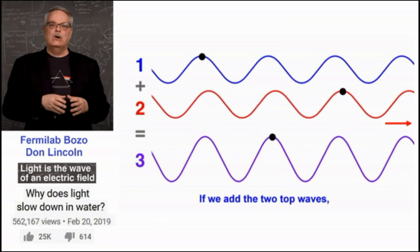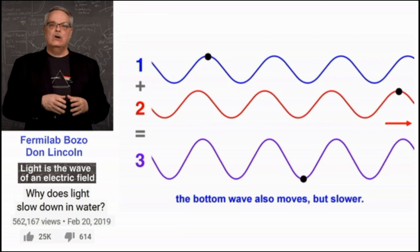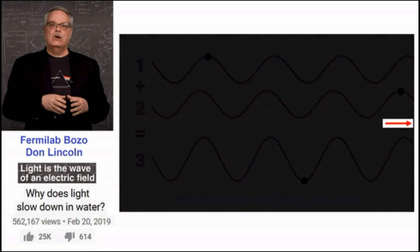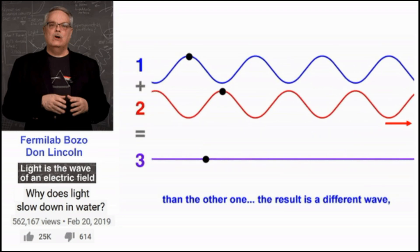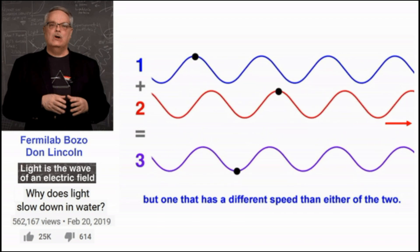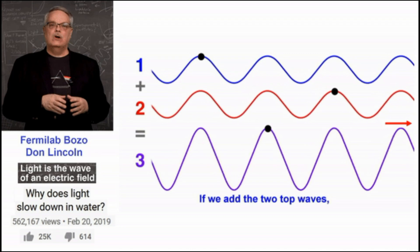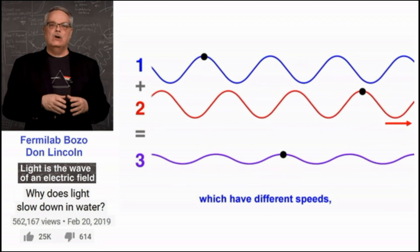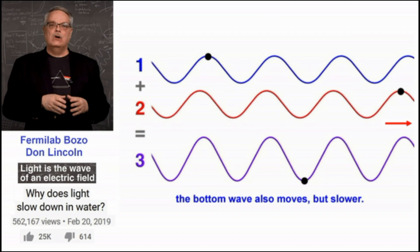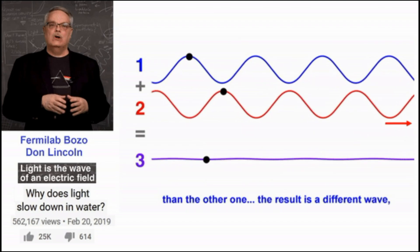If we add the two top waves mathematically, which have different speeds, the bottom wave also moves but slower. But that's not the case — when you look at where the red arrow is, when it starts again the two waves are moving at the same speed. What this guy is confusing is amplitude — the up-and-down height of the wave. All he's doing is making the wave go higher. He's doing amplitude and calling it speed. He confuses amplitude with speed, and that's the mechanism these so-called professionals are proposing for why light goes slower through a prism, through glass, or through any denser medium like water.